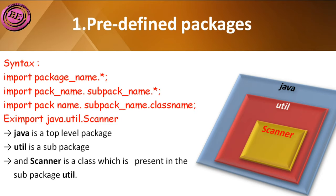Here is an example: import java.util.Scanner. Java is the top-level package, util represents the sub-package, and Scanner is the class which is present in the sub-package util. So java is the main package, util is the sub-package of java, and Scanner is the class present in the util package.